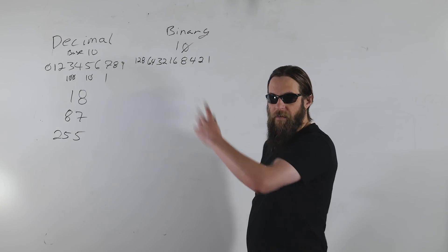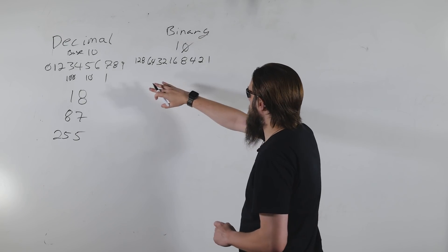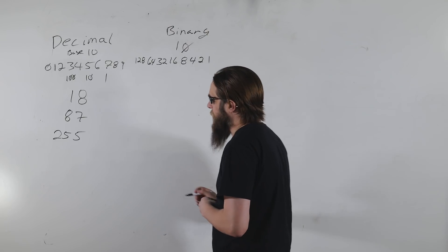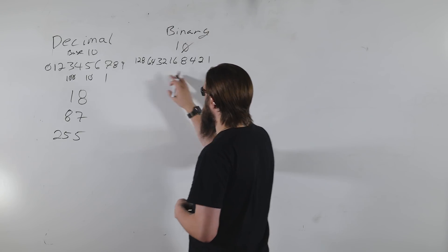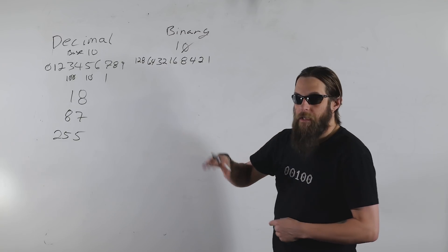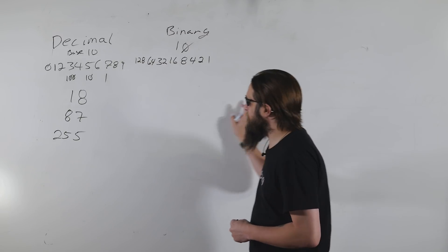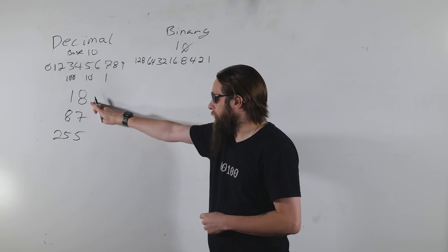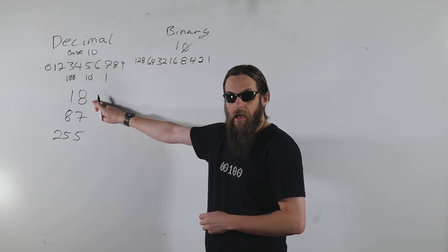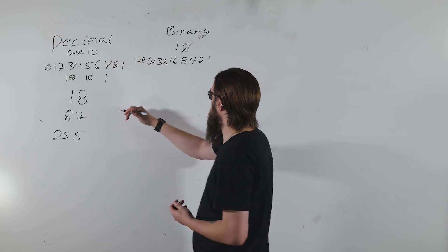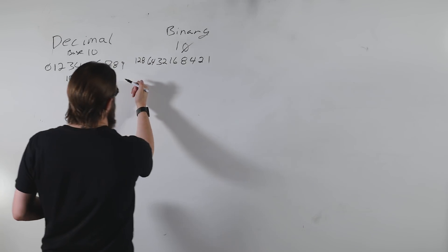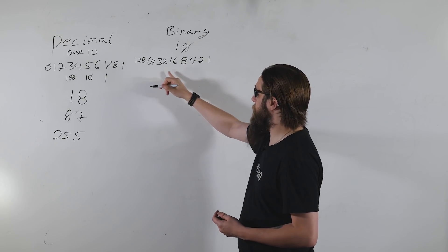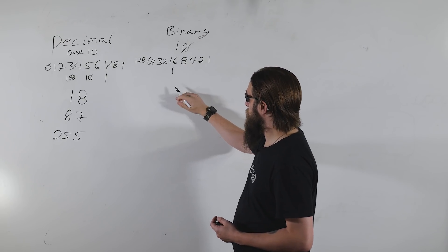Binary numbers literally consist of a long string of ones and zeros. To translate decimal into binary, you move as far to the left as you can on the place value scale until you can't go any higher. For 18, for example, we don't have a 128, we don't have a 64, we don't have a 32, but we do have a 16, which leaves us with 2.